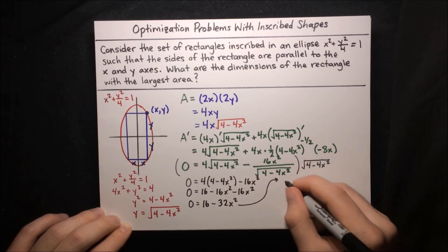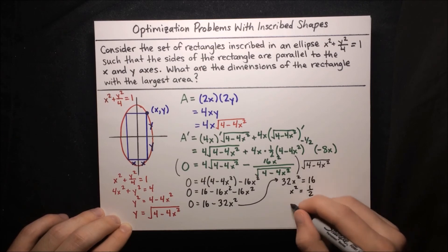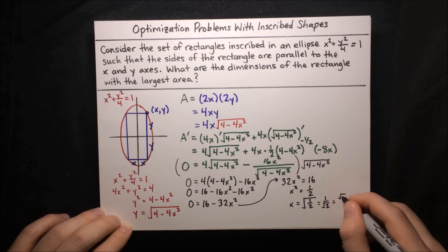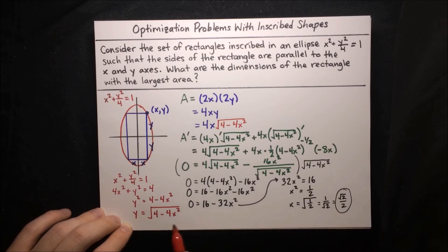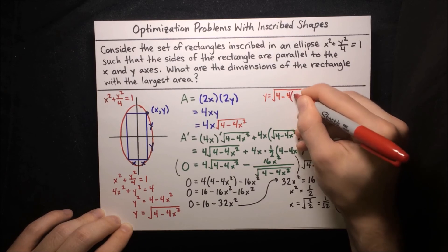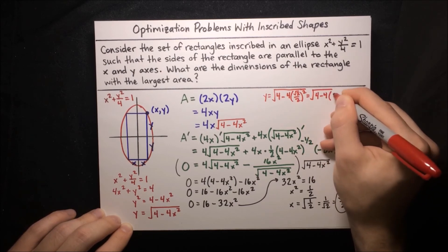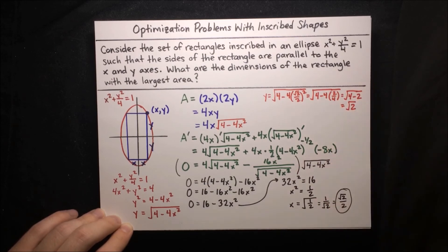Solving: 32x squared equals 16, so x squared equals one half, which means x equals the square root of one half, which simplifies to 1 over root 2, or root 2 over 2. You can check that this is a maximum using the first or second derivative test. To find y, we plug x equals root 2 over 2 into our y formula: y equals the square root of 4 minus 4 times (root 2 over 2) squared, which equals the square root of 4 minus 4 times 2 over 4, which equals the square root of 4 minus 2, which equals root 2.